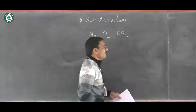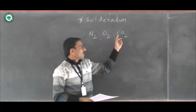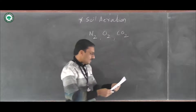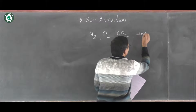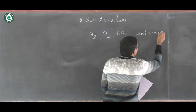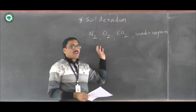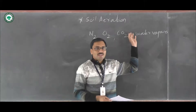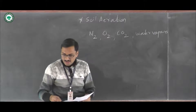Soil basically includes nitrogen, oxygen, and carbon dioxide. Along with this, the soil also consists of water vapors. If the circulation of these components in the soil is good, then that soil is fertile in nature.